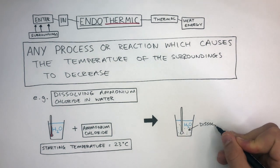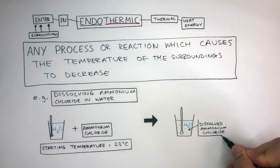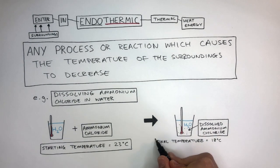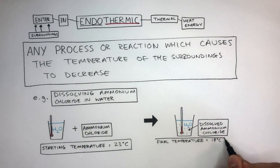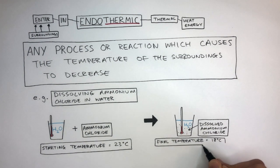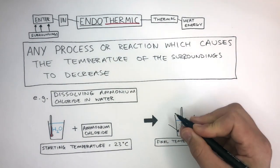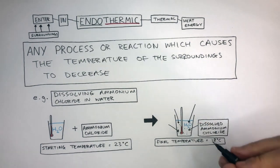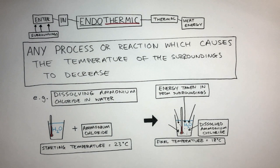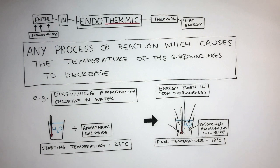These dots represent the dissolved ammonium chloride in the water. The final temperature is 18 degrees Celsius, so the temperature has decreased by 5 degrees. Therefore, this is an endothermic reaction. These arrows going into the solution represent energy being taken in from the surroundings. This is what makes it an endothermic reaction — the fact that lots of energy is being taken in from the surroundings, causing the temperature to decrease.